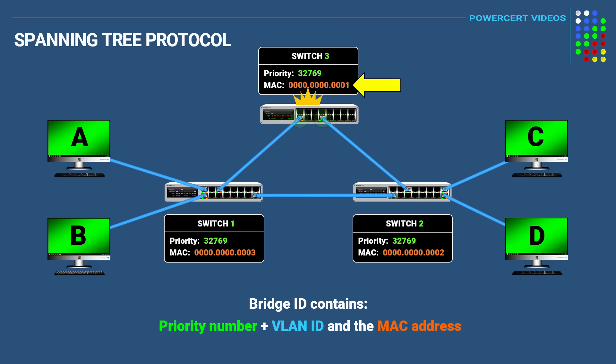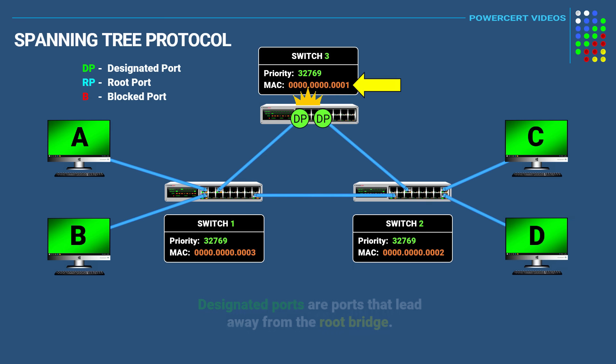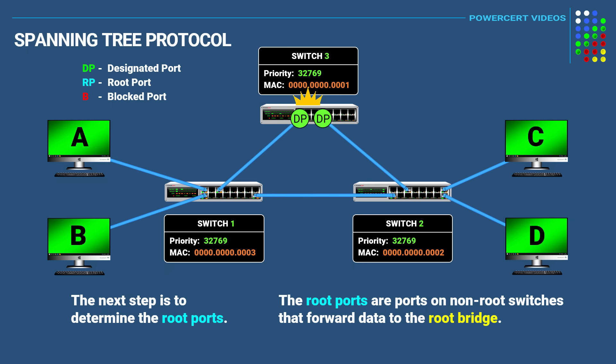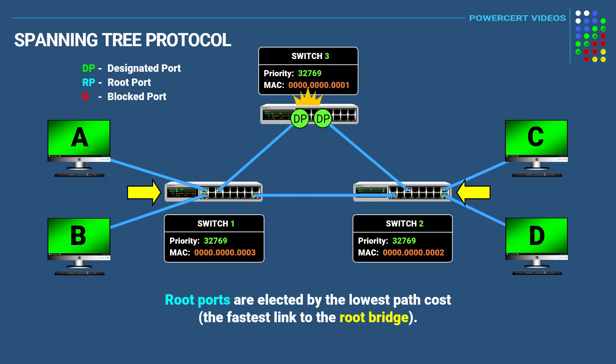The ports on the root bridge are labeled designated ports. Designated ports are ports that lead away from the root bridge. The next step is to determine the root ports. Root ports are ports on the non-root switches that forward data to the root bridge, and they are elected by what's called the lowest path cost — meaning the port with the fastest link to the root bridge.